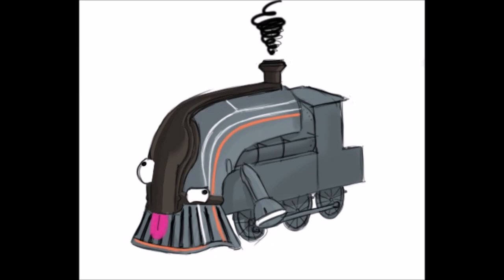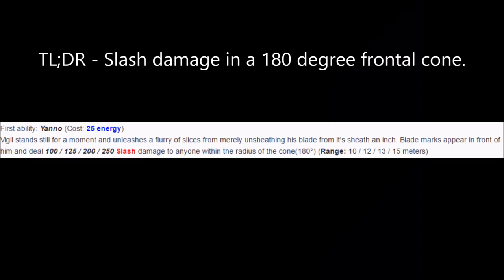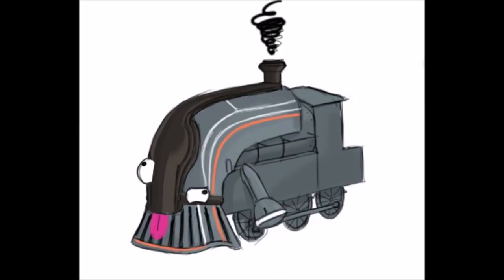Vigil's first ability is Yano. Vigil ceases all movement for a brief amount of time and slashes in a 180 degree cone in front of him, dealing 250 slash damage to enemies in range. Yano might be too strong or too weak, depending on if the 250 slash damage is total, or if it's 250 slash damage per slash. In addition to that, the number of slashes is unknown, so for the moment Yano is a little murky in terms of description.